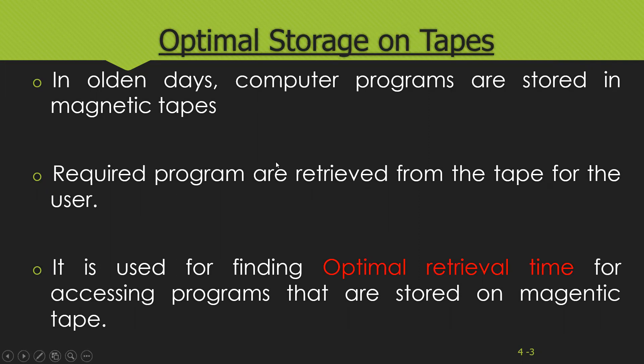First, let us discuss the background on tapes. In earlier days, computer programs used to be stored on magnetic tapes instead of hard drives, CDs, or other secondary memory devices. The property of magnetic tapes is that they provide only sequential access. If you want to retrieve any program from a magnetic tape, you can only access it sequentially, unlike a CD where you can click directly on track 10.